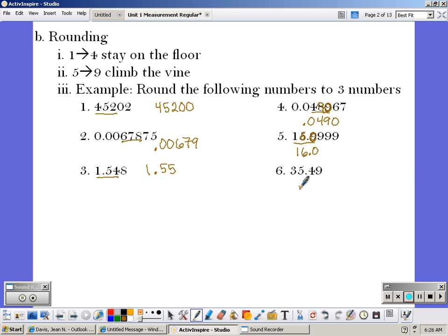In number six, our three numbers are three, five, and four. Then our fourth number is nine, which is going to round up. So that would become 35.5.